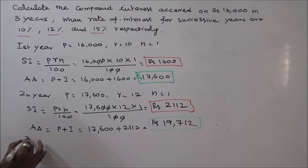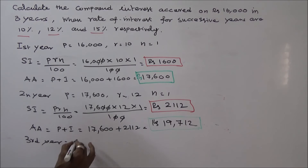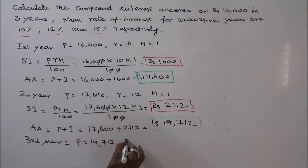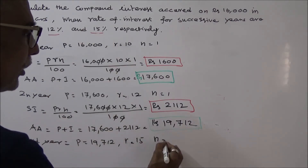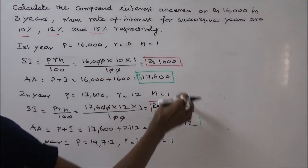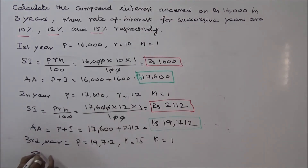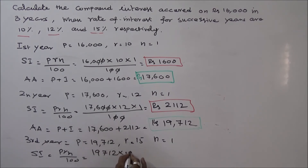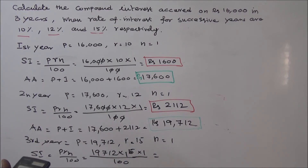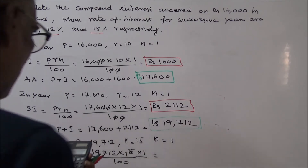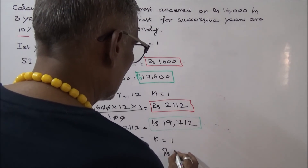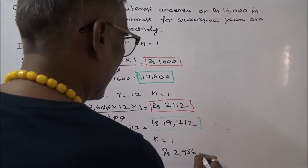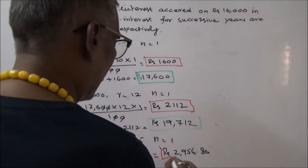For the third year, the principal amount is 19,712 and rate of interest is 15%, N is equal to 1. Again, simple interest is equal to PRN by 100, that is equal to 19,712 into 15 by 100 into 1.